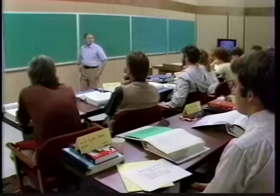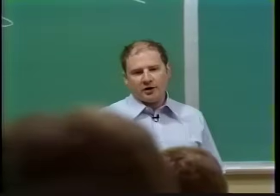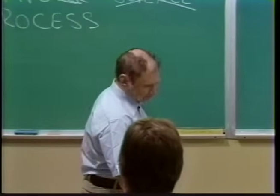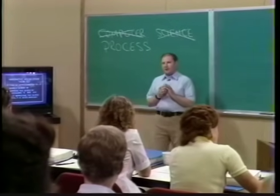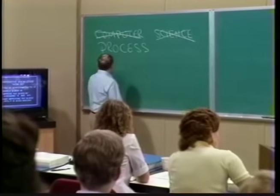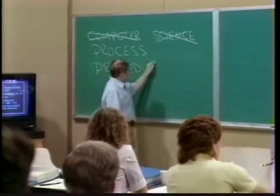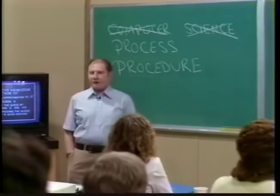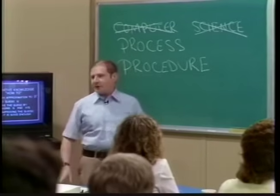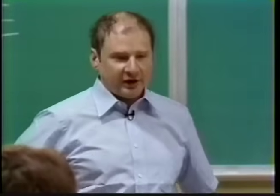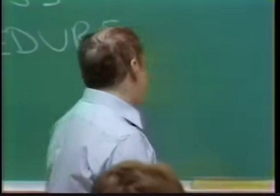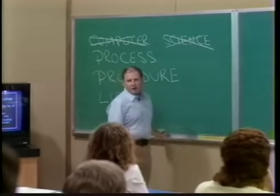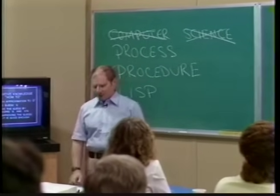What's a process in general? You can think of it as a magical spirit that lives in the computer and does something. The thing that directs the process is a pattern of rules called a procedure. So procedures are the spells that control these magical spirits that are the processes. Everyone needs a magical language — sorcerers use ancient Akkadian or Sumerian. We're going to conjure our spirits in a magical language called LISP, designed for casting the spells that are procedures to direct the processes.